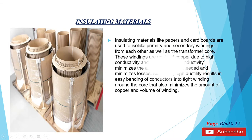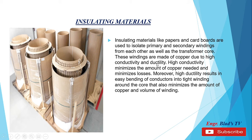Insulating materials. Insulating materials like papers and cardboards are used to isolate primary and secondary windings from each other as well as from the transformer core. These windings are made of copper due to high conductivity and ductility. High conductivity minimizes the amount of copper needed and minimizes losses. High ductility results in easy bending of conductors into tight windings around the core, which also minimizes the amount of copper and the volume of the winding.